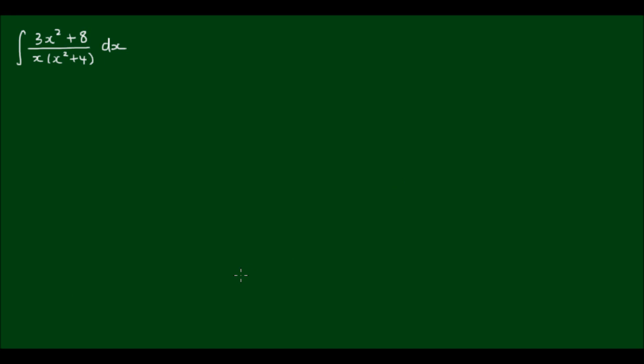The good news is someone has already factored the denominator for me, so there is one step less work to do. So let's go ahead and decompose 3x² + 8 divided by x(x² + 4) into its partial fractions.